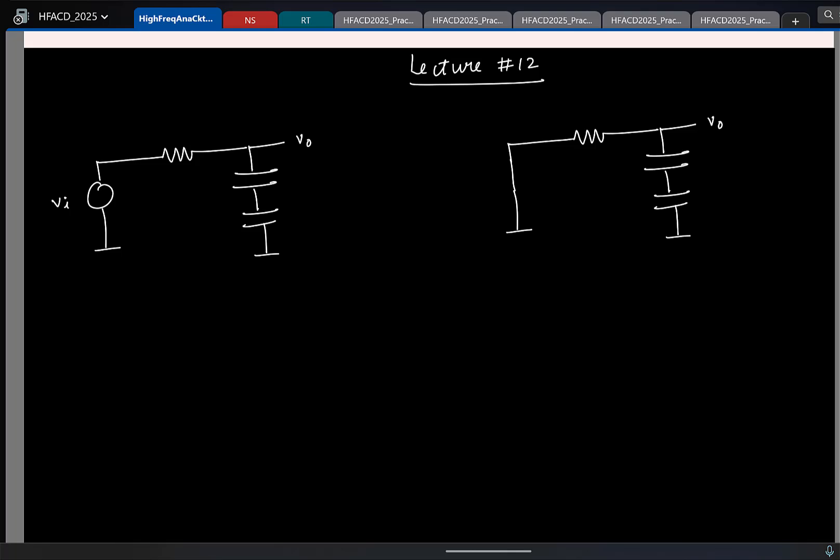Remember the number of poles is basically the maximum number of independent capacitor voltages you can initialize. Here, how many capacitor voltages I can initialize independently? I can define the initial voltage across this capacitor. What about this capacitor? You can still do, there is no contradiction, right. So, how many poles I should have here? Two poles. We will come to that. But this is the circuit. What you are saying is reduced version of the circuit, but they are not identical exactly. So, here how many poles I have? Two poles.